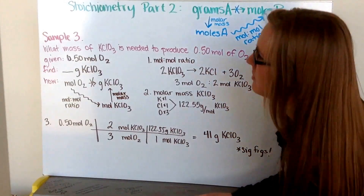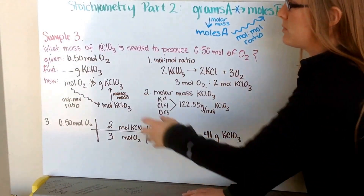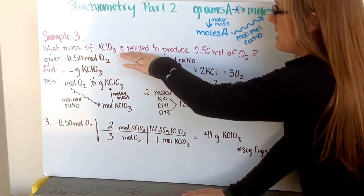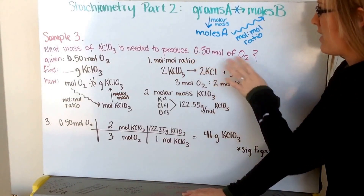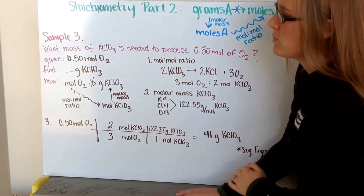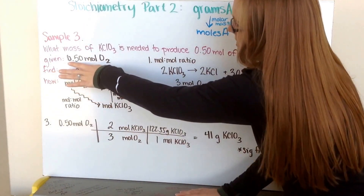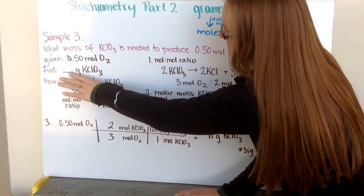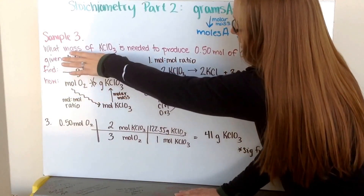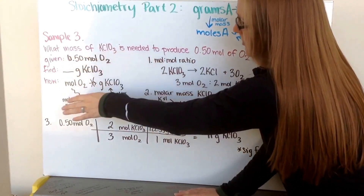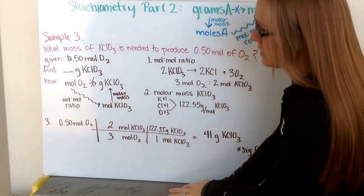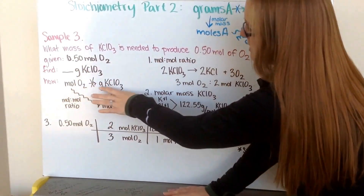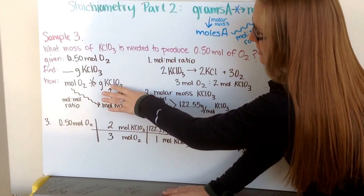Let's go through sample problem number three. I want to know the mass of potassium chlorate that is needed to produce 0.50 moles of oxygen gas. I first write down what I'm given: 0.50 moles of oxygen. I need to find the grams of potassium chlorate. From what I'm given to what I'm trying to find, I have moles of oxygen to grams of potassium chlorate.